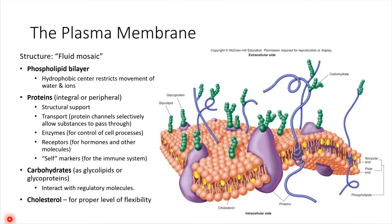One last major component of the plasma membrane is cholesterol. Cholesterol is shown in yellow, and it's there to help make the membrane a little bit rigid — to give the proper level of flexibility. We don't want this to be too fluid, otherwise the cell might rip apart accidentally.